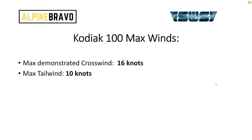We also need to consider maximum winds. The maximum demonstrated crosswind is 60 knots — the Kodiak is definitely quite tricky to land in those conditions, particularly with gusts. The maximum tailwind is 10 knots, but again it's not very advisable. You probably wouldn't want to go much higher than five knots of tailwind.